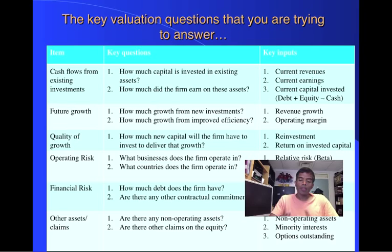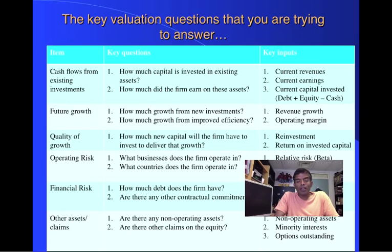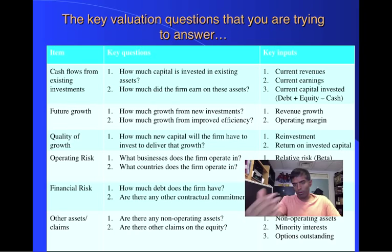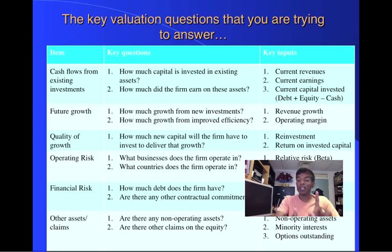Then I'm looking for clues on operating risk, in two places. One is what businesses this company operates in — it could be a company like GE in 26 different businesses, or Walmart in just one. The second dimension is the countries in which my company operates. If you're a retailer invested just in the US, you might be less risky than if you're a retailer with 70% of revenues in the US and 30% from Mexico. So I need to know what countries your company gets its revenues from. On financial risk, I'm looking to see how much debt you owe — short term as well as long term — and whether there are any other contractual commitments.